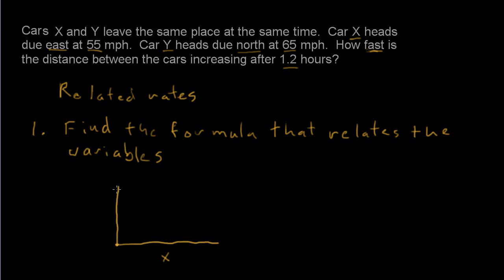and let's say after t hours it's traveled x miles. And then we also have car Y, and it's going due north, and so after t hours it's traveled y miles, and the distance between the two is z. And notice we have a right triangle here.